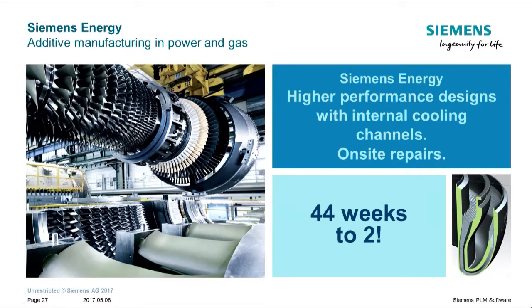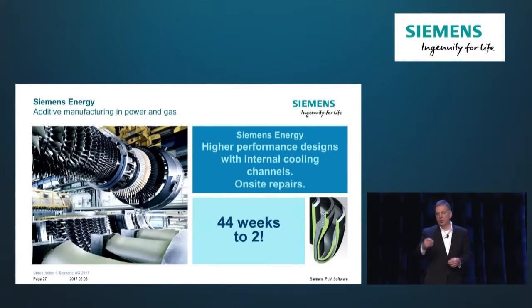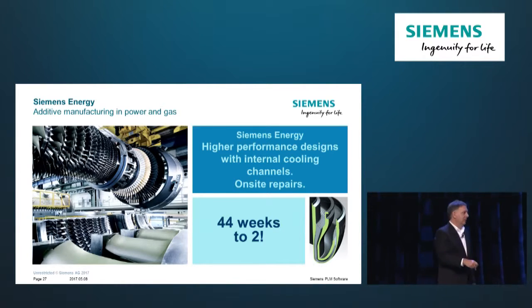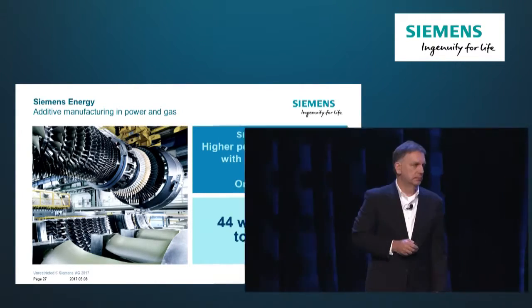Back to Siemens — we don't just tell you to use this, we use it. In this process we can do repairs for our Siemens Energy Group. It used to take 44 weeks: ship the part back to HQ, make the changes, update. Now we're doing it on site with 3D printed parts in two weeks — 44 weeks down to two. We eat our own dog food.